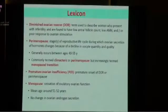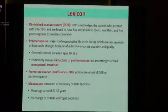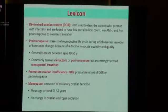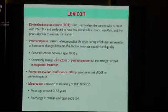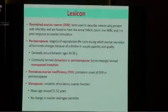When we talk about diminished ovarian reserve, it's usually in the context of infertility. It's used to describe women who have an unexpectedly low antral follicle count, or a poor response to stimulation, or a low AMH. Perimenopause — or the menopausal transition — generally refers to the age range 40 to 55. And then we have premature ovarian insufficiency, used to be called premature menopause, but we no longer like that term. So it's the premature onset of perimenopause or premature diminished ovarian reserve.